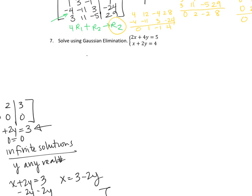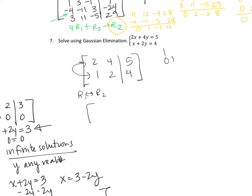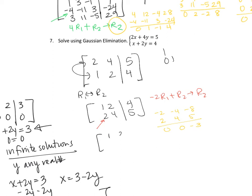For number 7, writing the augmented matrix as 2x2: 2, 4, 5 in row 1 and 1, 2, 4 in row 2. Interchanging rows gives 1, 2, 4 and 2, 4, 5. Then negative 2 times row 1 plus row 2: scratch work gives negative 2, negative 4, negative 8 plus 2, 4, 5 equals 0, 0, negative 3. All variables cancel but we get a false statement — there is no solution to this system.